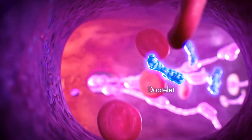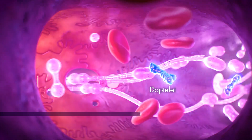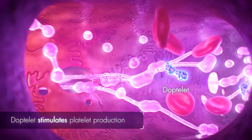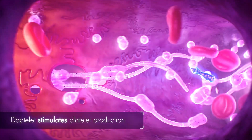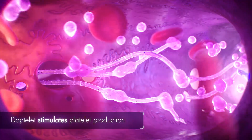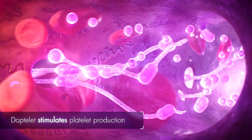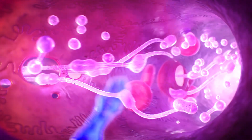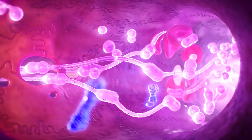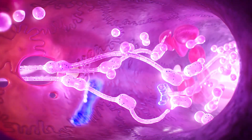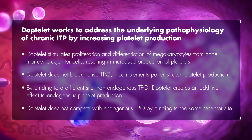Hence, DopTelit can be used as an alternative therapeutic option for thrombocytopenia in adult patients with chronic ITP who have had an insufficient response to previous treatment. DopTelit works to address the underlying pathophysiology of chronic ITP by increasing platelet production.